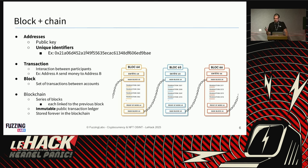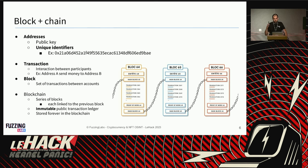Some key terms: an address is basically a representation of the public key — when you have a wallet you have a private key and public key, and the address is the public key formatted in a specific way. It's a unique identifier, which is very useful for us. Transactions are interactions between two addresses — user to smart contract, or person to person — and all transactions are grouped into blocks.